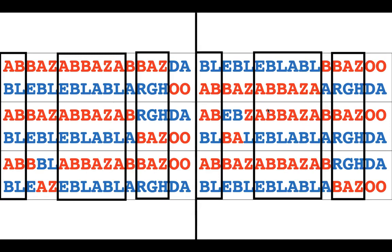Now we can start to find haplotype blocks — regions of the chromosome where all individuals have either one type or the other type. Looking at this part of the chromosome, each row represents a different individual dog with their two copies of the DNA. At the first part of the DNA code, every dog either has AB or BL — you can't find an individual that isn't one or the other. So that's a haplotype block.